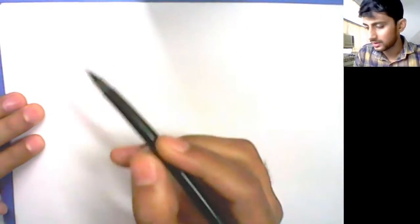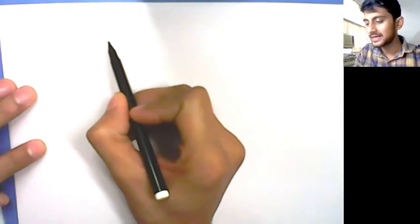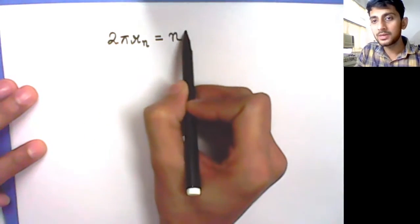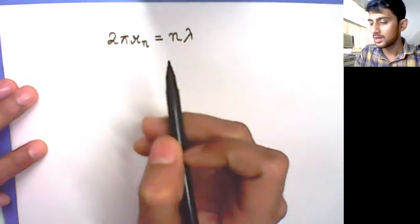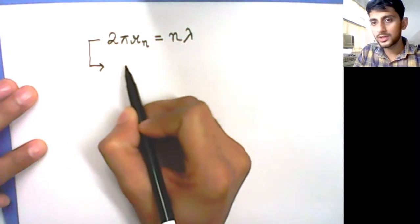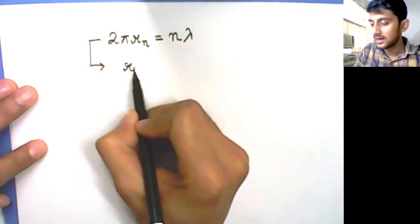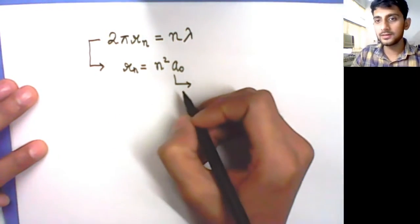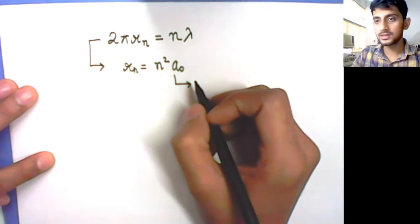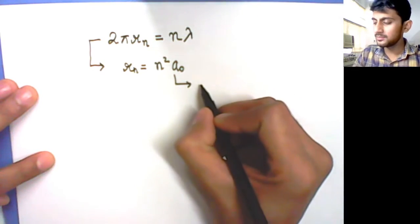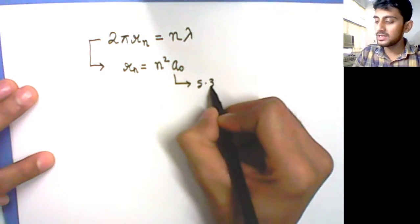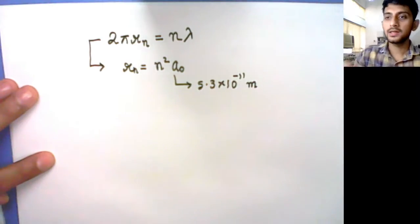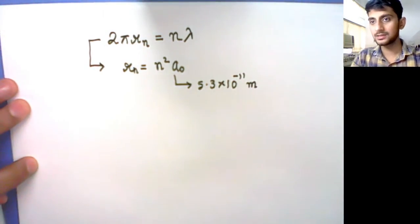We were discussing Niels Bohr's atomic model. The condition for orbital stability was that the circumference for a given radius rn should be an integral multiple of the de Broglie wavelength associated with the electron. From this, we also got the Niels Bohr formula for radius: rn equals n-squared times a0, where a0 is the first orbital radius of the electron in the hydrogen atom, which is 5.3 × 10⁻¹¹ meters. This is what we discussed in the last part of the video.